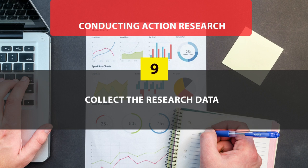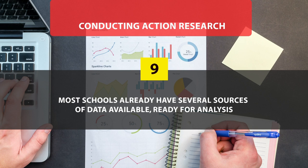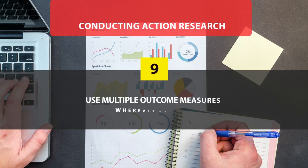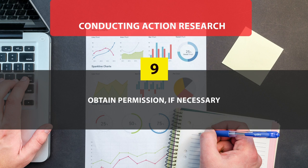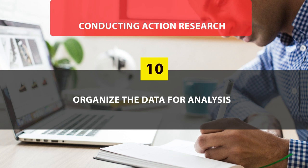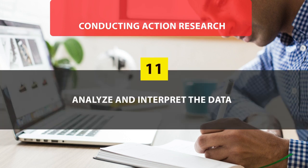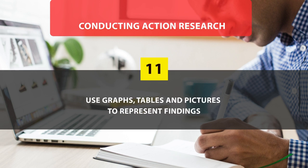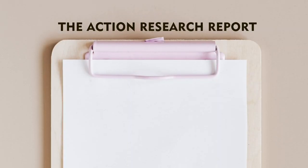Some issues already have existing school data — such as attendance, participation in teaching and learning, or completion of activities. In those cases, you just need to identify and analyze that data. But sometimes you need to collect data through various measures. If required, you may need to get permission, and if psychosocial factors are involved you need to follow ethical guidelines and ensure an adequate and appropriate sample. Once collected, you organize the data for analysis, use statistics to analyze it, and use graphs, tables, and pictures to represent the findings.